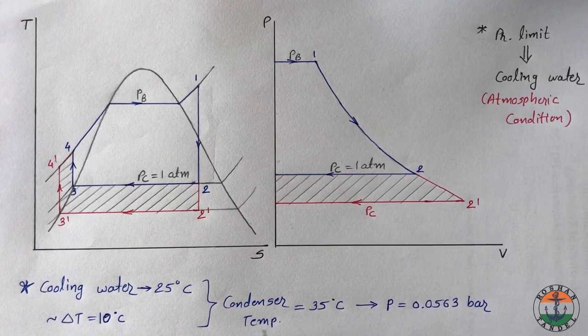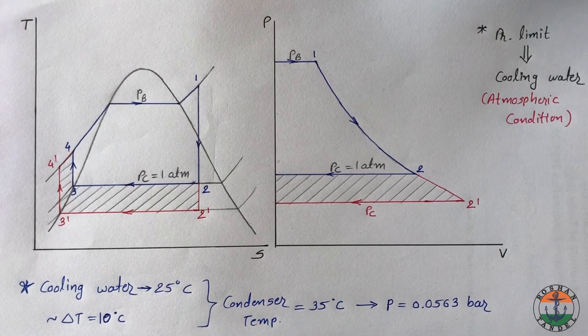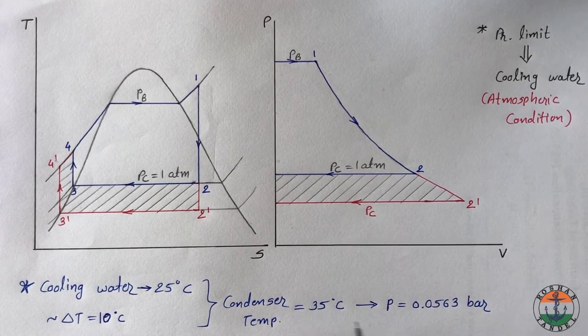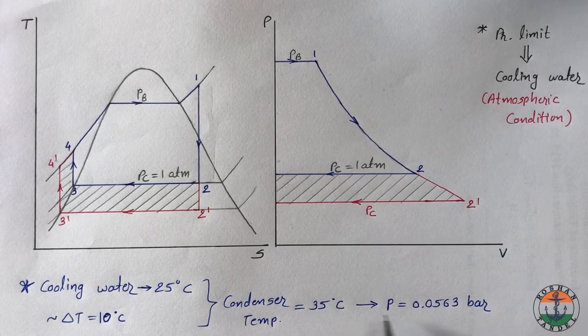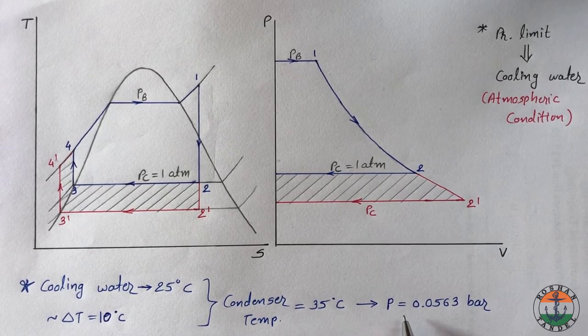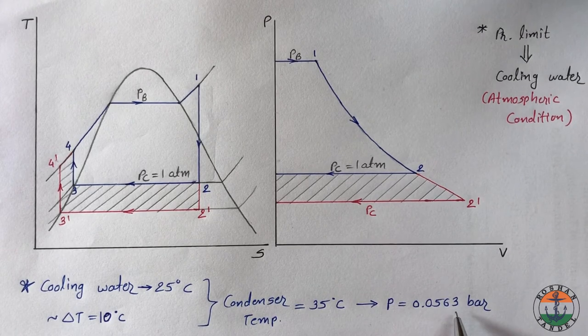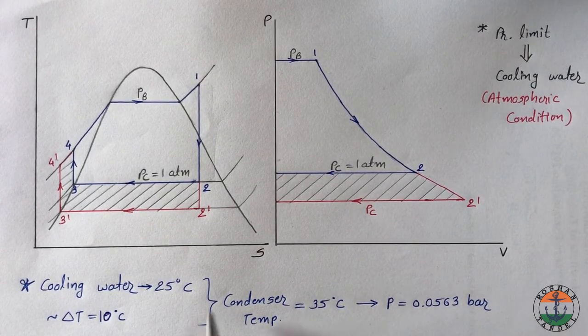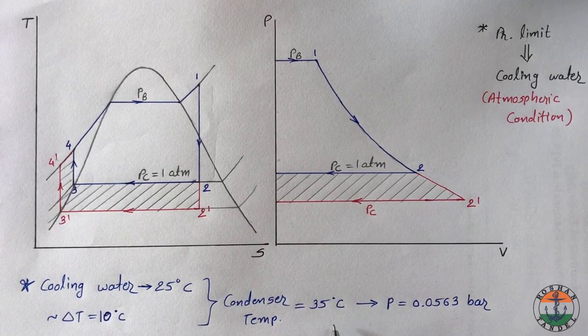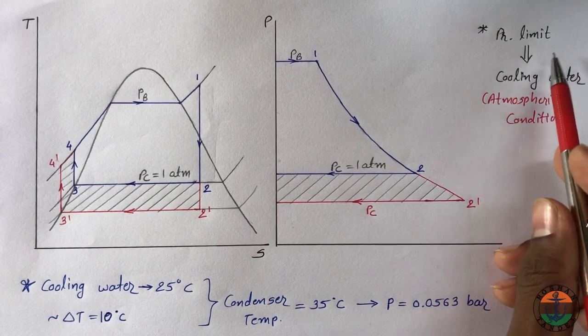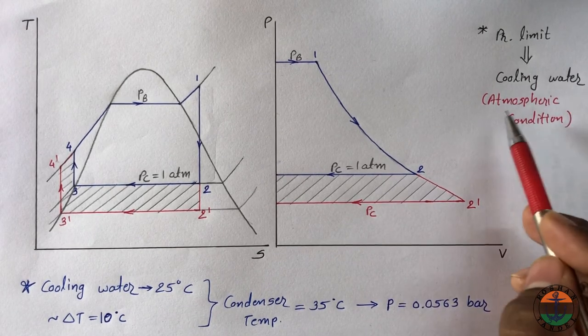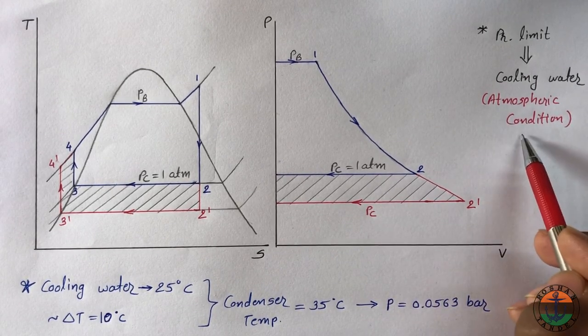To transfer the heat there must be a temperature difference of around 10 degree Celsius. So you have to maintain condenser temperature at about 35 degree Celsius. At this temperature corresponding saturation pressure is 0.0563 bar. This is how condenser pressure limit is decided. You can say that pressure limit in the condenser is dependent on cooling water or atmospheric condition.